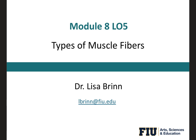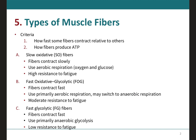This is learning outcome number five, which is the last one for module eight, and we're going to be talking about the different types of muscle fibers. When classifying the different types of muscle fibers, there are two criteria to consider: how fast some fibers are going to contract relative to the others, and also how fibers produce ATP. By using these criteria, we come up with three main types of skeletal muscle fibers.